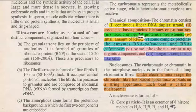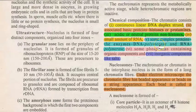Histones are basic proteins made up of basic amino acids such as arginine and lysine. They are positively charged and tightly coupled through electrostatic forces with the negatively charged DNA molecule. The next component is acidic or neutral proteins, also known as non-histone molecules.